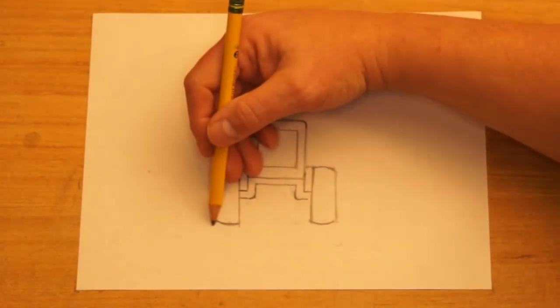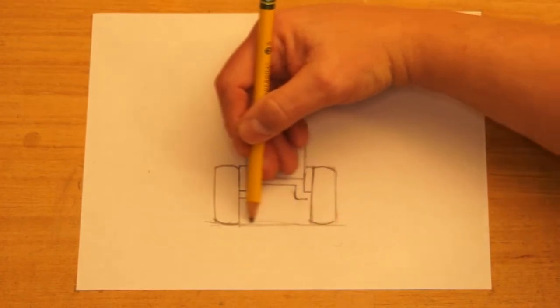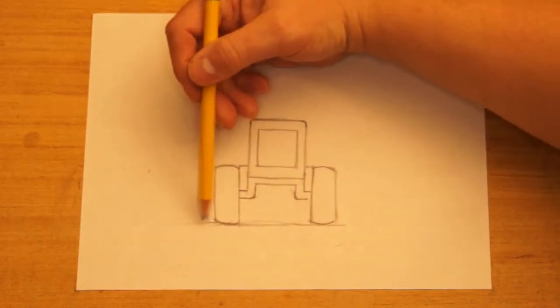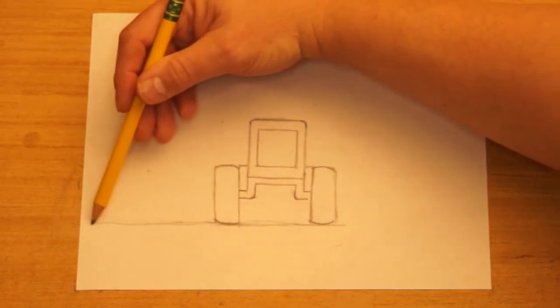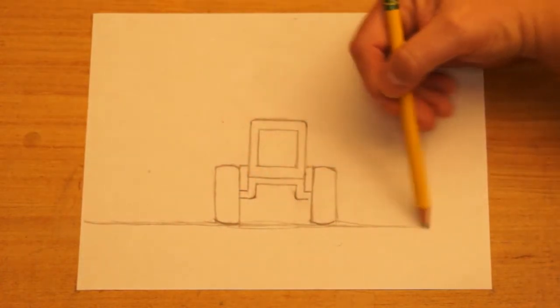Let's go ahead and draw the ground. Draw a line that goes all the way across the page so our tractor will be sitting on the ground.